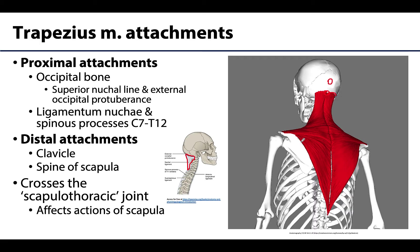The distal attachments are on the clavicle as well as the scapula, meaning these muscles will cross the scapulothoracic joint. Recall that the scapulothoracic joint is not a typical synovial joint, but instead describes the movements of the scapula on the thoracic cage, really helping to better facilitate a full range of motion at the neighboring shoulder joint. The trapezius muscles can also assist in the movement of some of the intervertebral joints.